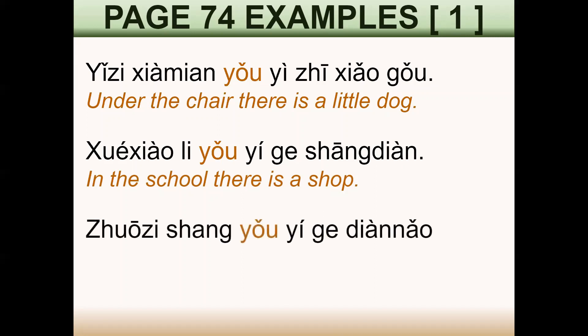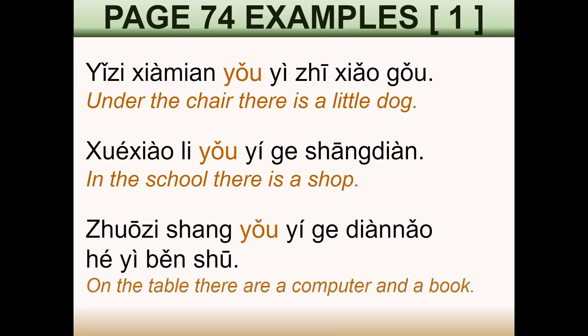Number 3: 桌子上有一个电脑和一本书 — on the table, there are a computer and a book.